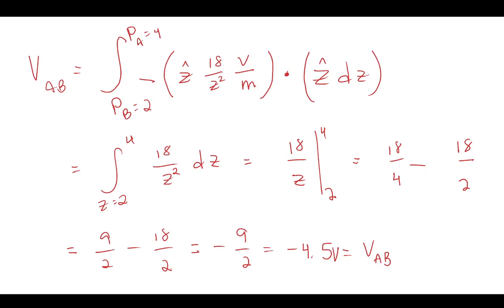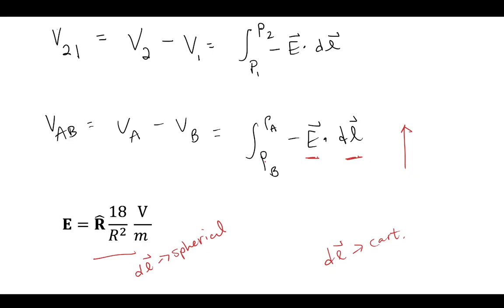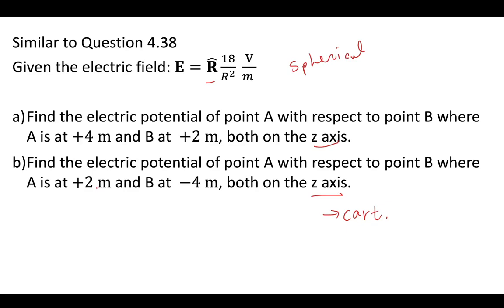So the first case went well. We were able to convert from spherical coordinates to Cartesian coordinates, find the potential at point A with respect to point B, and identify the differential length dz. Now Part B is going to be quite a bit more tricky, because we need to find the potential at A with respect to B where A is at positive 2 and B is at minus 4. I will cover that in the next video.